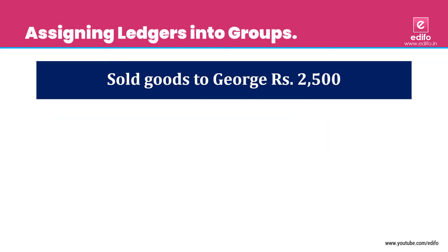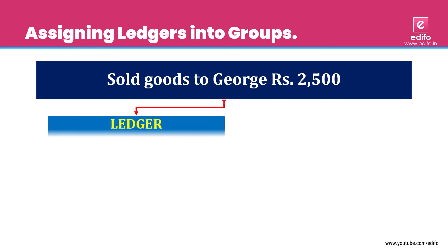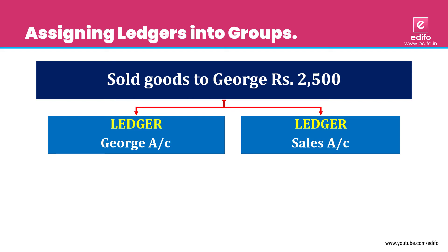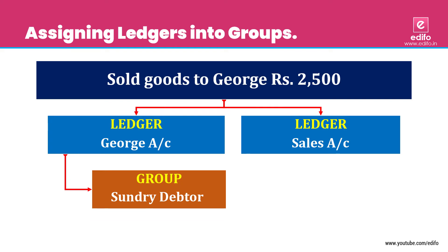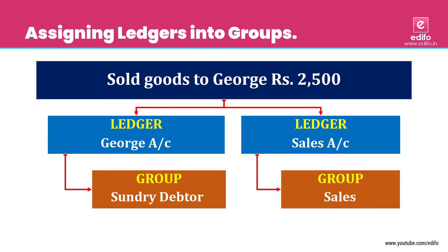Next transaction: sold goods to George, rupees 2,500. There is no cash flow here because this is a credit sale. Instead of cash, replace it with George as the personal account. Two aspects: George account and sales account. George belongs to 'Sundry Debtors' and sales belongs to the 'Sales' group.